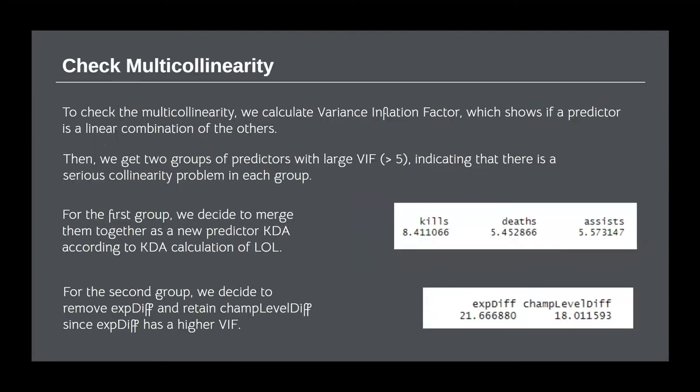Next, we check for multicollinearity. To check toward that, we calculated VIF value, which shows if a predictor is a linear combination of the others. Then we get two groups of predictors with large VIF indicating that there is a serious collinearity problem in each group. For kills, deaths, and assists, we merge them together as a new predictor called KDA. And for the second group, we decide to remove experience difference because it has a higher VIF value.